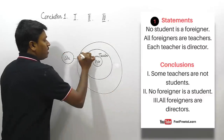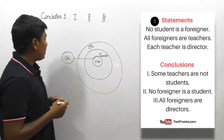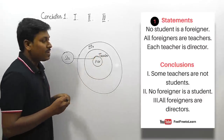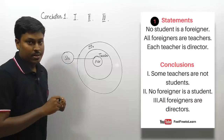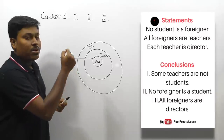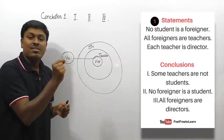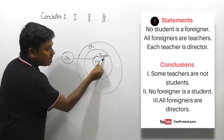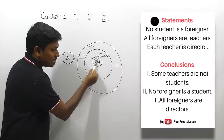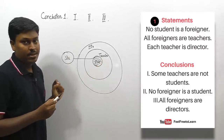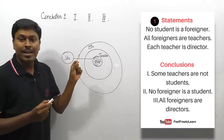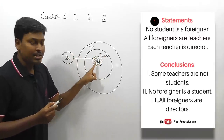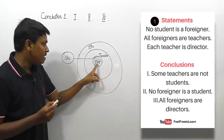So, no student is a foreigner, all foreigners are teachers, and since 'each' denotes 'all,' all teachers are directors. Moving to conclusion number one: 'some teachers are not students.' This is based on the 'some not' concept. For 'some not,' read only the first two words — 'some teachers.' Some teachers will be this region, and this region is not a student, which is exactly correct.